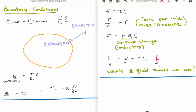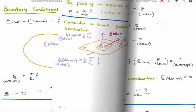Now the question is: if we're trying to work out the pressure caused on the conductor due to the electric field, which value of the electric field should we in fact use? The answer is we use the average electric field, which I'll show you now.